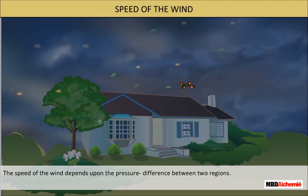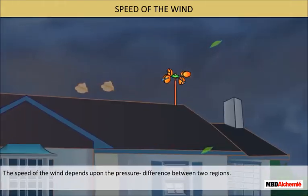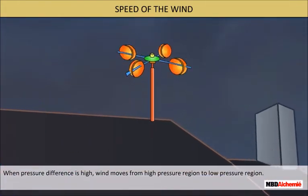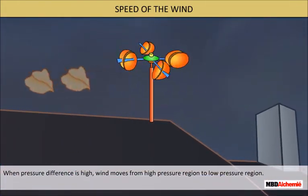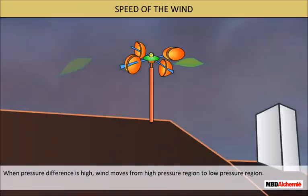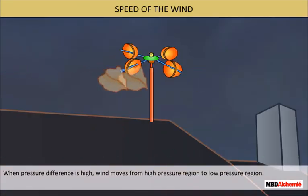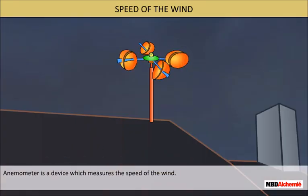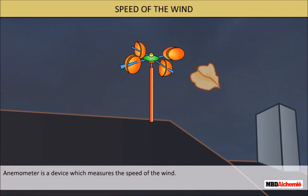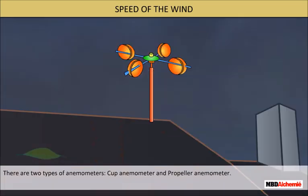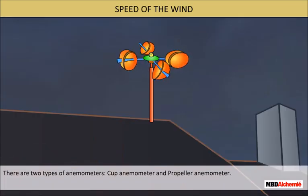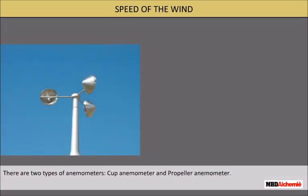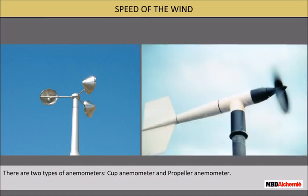The speed of the wind depends upon the pressure difference between two regions. When the pressure difference is high, wind moves from the high pressure region to the low pressure region. An anemometer is a device which measures the speed of the wind. There are two types of anemometers: cup anemometer and propeller anemometer.